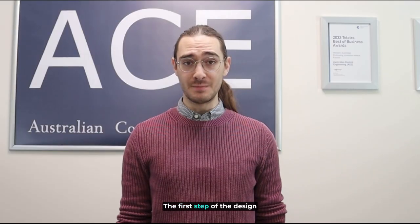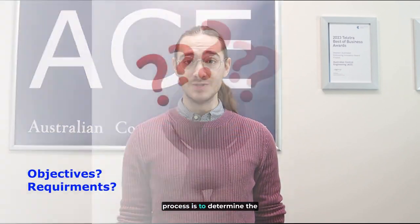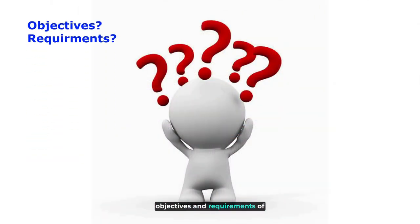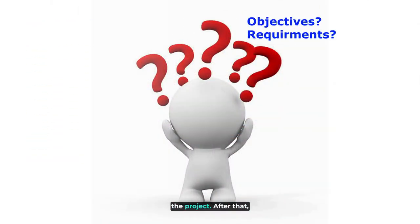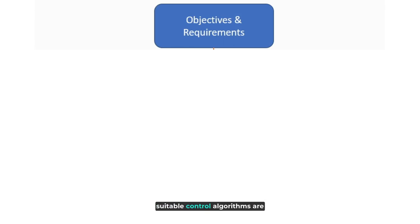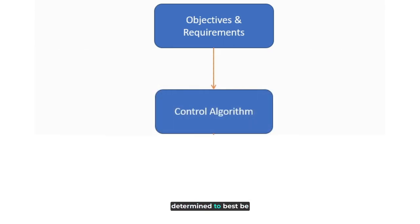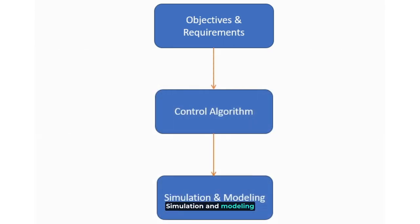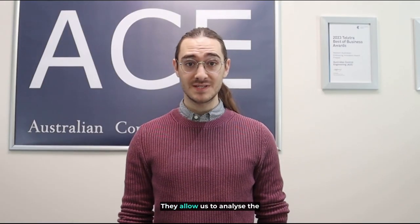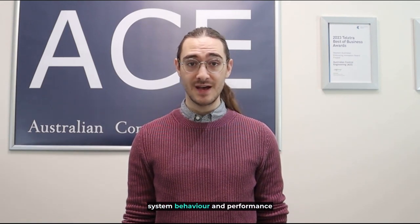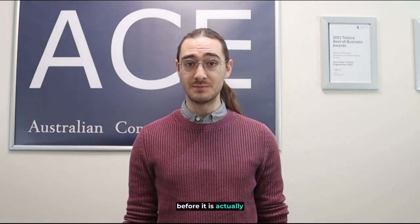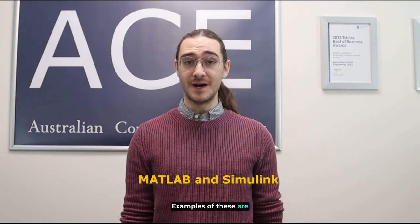The first step of the design process is to determine the objectives and requirements of the project. After that, suitable control algorithms are determined to best be used for the system. Simulation and modeling play an important role in the control systems design process, allowing us to analyze the system behavior and performance before it is actually implemented. Examples of these are MATLAB and Simulink.